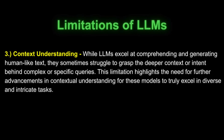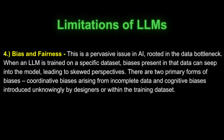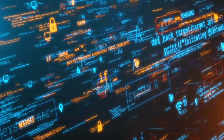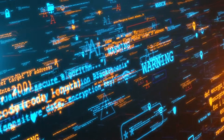The third limitation revolves around context understanding. While LLMs excel at comprehending and generating human-like text, they sometimes struggle to grasp the deeper context or intent behind complex or specific queries. Finally, the fourth limitation is bias and fairness — a pervasive issue in AI rooted in the data bottleneck. When an LLM is trained on a specific dataset, biases present in the data can seep into the model, leading to skewed perspectives, including both data-driven biases from incomplete data and cognitive biases introduced by designers or the training dataset.